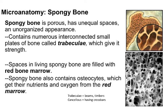Spongy bone is also referred to as trabecular bone or cancellous bone. 'Trabeculum' is Latin for a timber — think of it as a truss or a supporting crossbeam in a building. Spongy bone is called that because it's porous, and the trabeculae have irregular shapes. In a living animal, all of those spaces you see would be filled with red bone marrow.